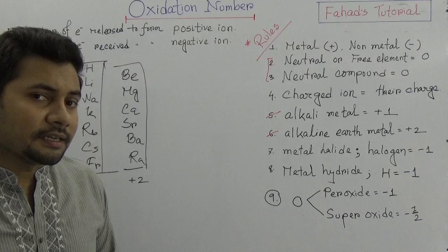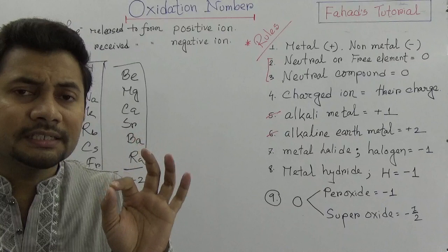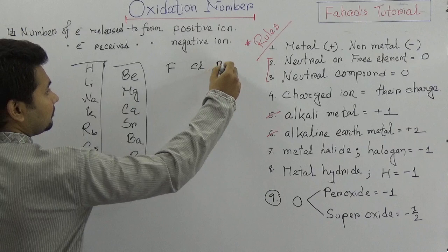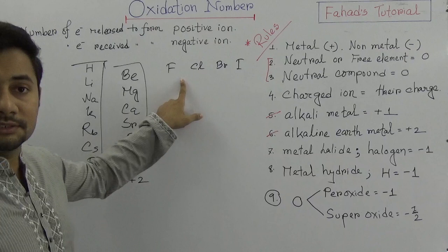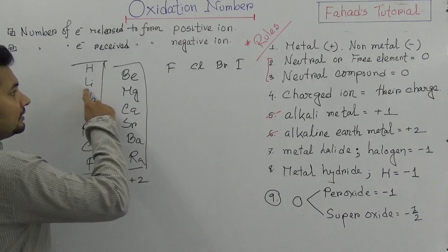Rule 6: In metal halides, halogens have an oxidation number of −1. Halogens include fluorine, chlorine, bromine, and iodine. When metals form compounds with halogens — like lithium fluoride, lithium chloride, potassium fluoride, potassium chloride, magnesium fluoride, calcium bromide, barium chloride — these are common metal halide compounds.